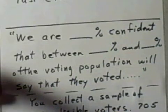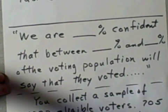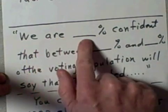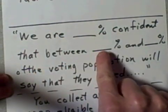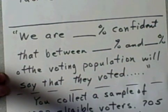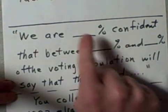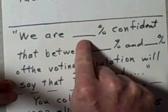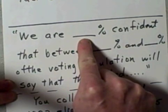After we get the sample we'll calculate the confidence interval and make a statement that looks like this with these blanks filled in: we are blank percent confident that between some percent and another percent of the total voting population will say that they voted.